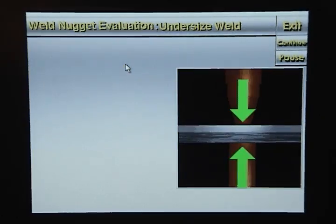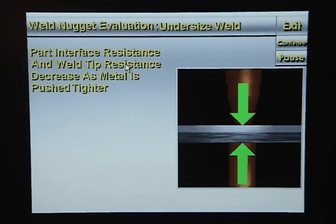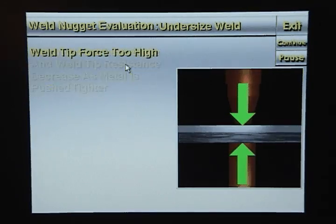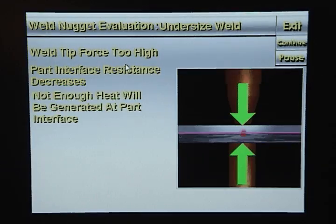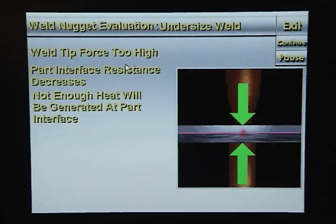The metal stack-up is pressed together by the weld tips. The part interface resistance and weld tip interface resistance decrease as the metal is pressed tighter together. If the weld tip force is too high, the part interface resistance will decrease too much. As current flows through the smaller resistance, not enough heat will be generated at the part interface to melt enough metal to form a good weld, and you will get an undersized weld nugget.